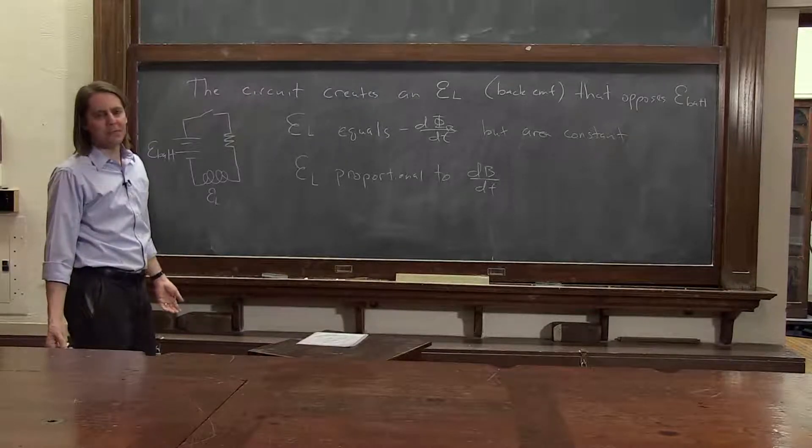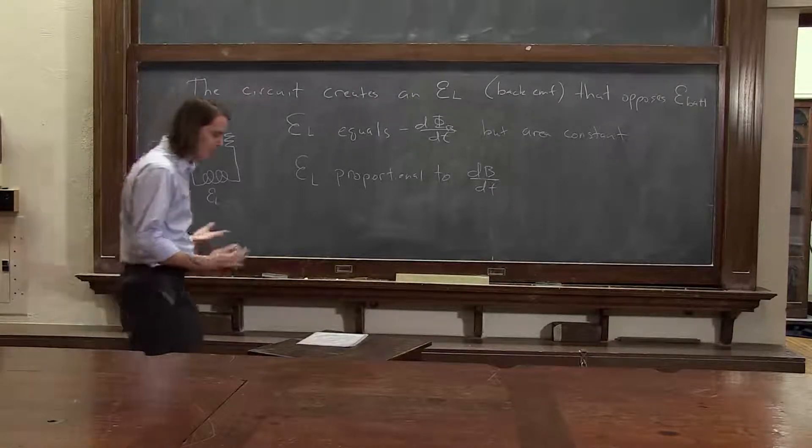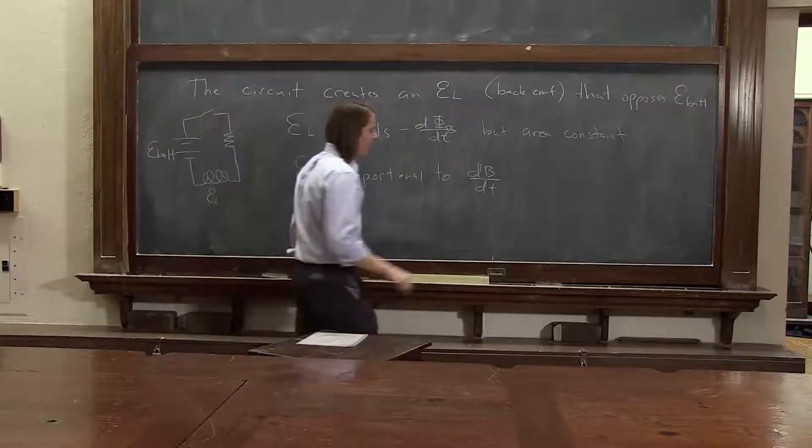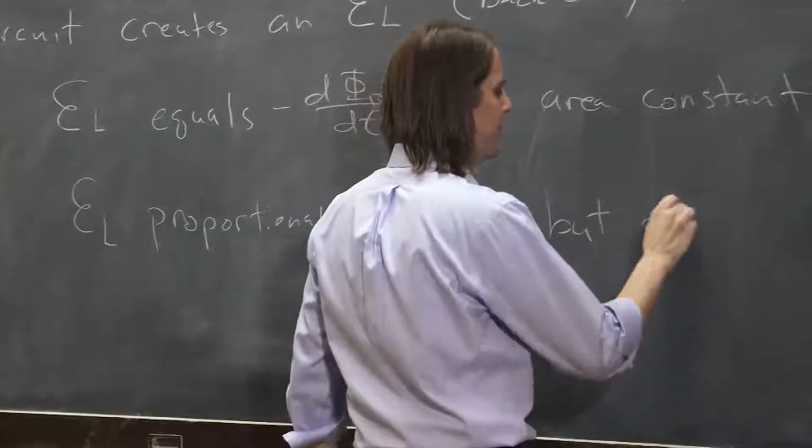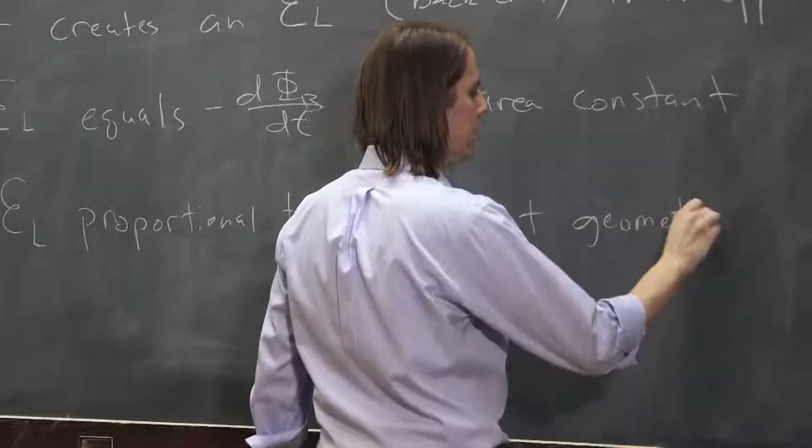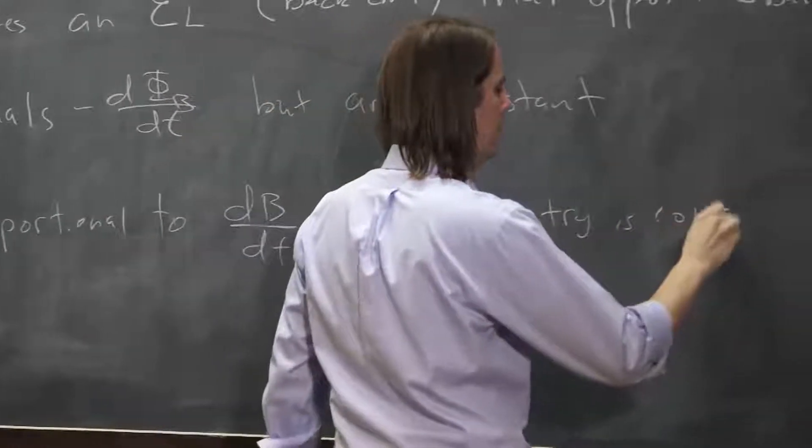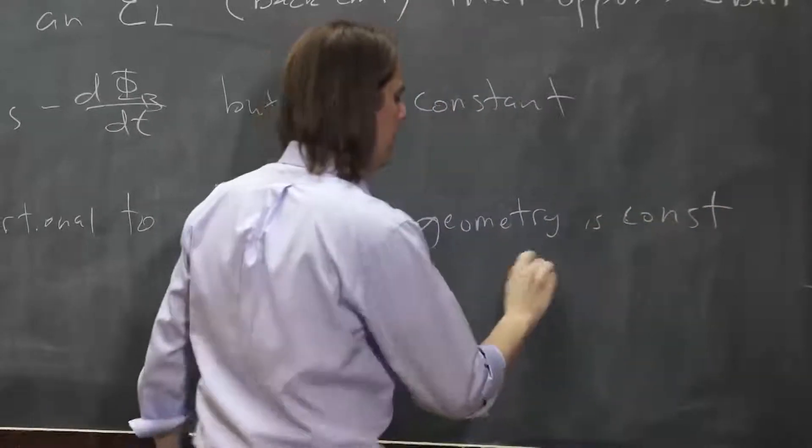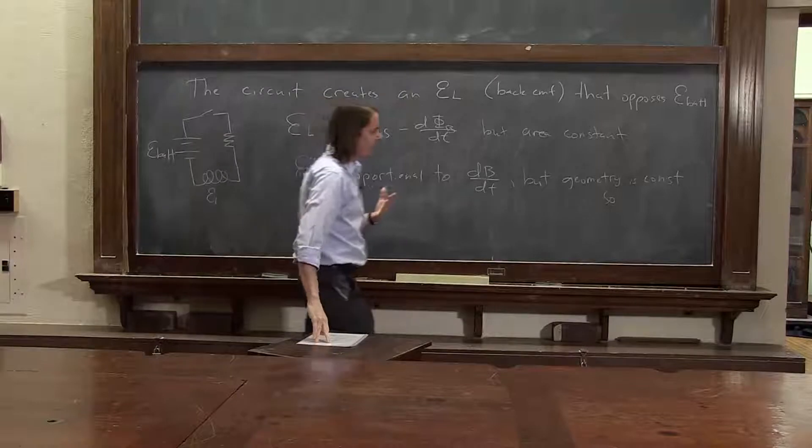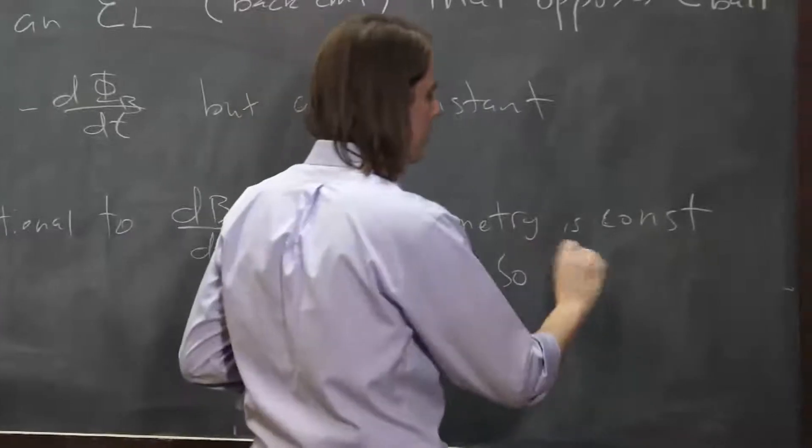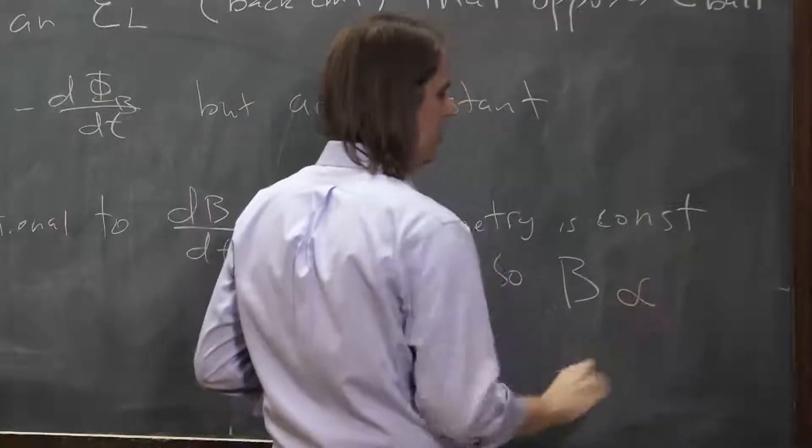But nobody wants to keep up with a magnetic field inside their circuit. That's not something we think of when we do a circuit. So since we have just this wound coil, we know that the B field magnitude is going to be proportional to the current.